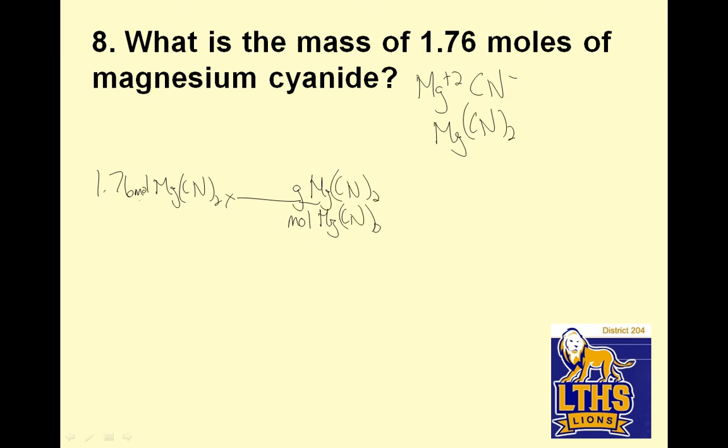If you remember when we did conversions, we had to cancel whatever unit was on top. And these things have to equal each other. So 1 mole equals, I go to the periodic table for magnesium, 24.31. So I have 24.31 plus 2 carbons, that's 24.02, and then I have 2 nitrogens, which is 28.00. I add all those up, and I have 76.33. So then I take 1.76 times 76.33 and Mr. Calculator tells me it's 134.3 grams of Mg(CN)2.